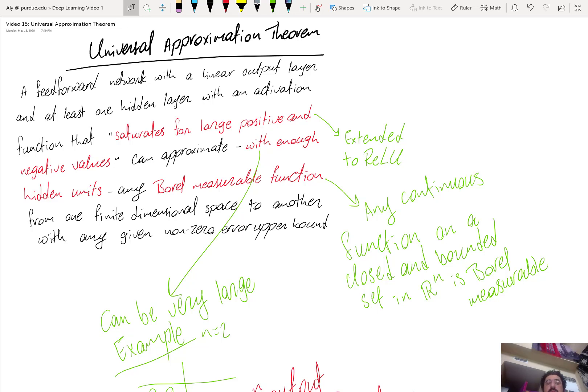And at least one hidden layer with an activation function that saturates, that satisfies the property of saturation. And I'll have enough hidden units. There is no limit on the number of hidden units that I can have. In fact, in most versions of that theorem, we need an exponential number of hidden units. And I'll approximate that function.